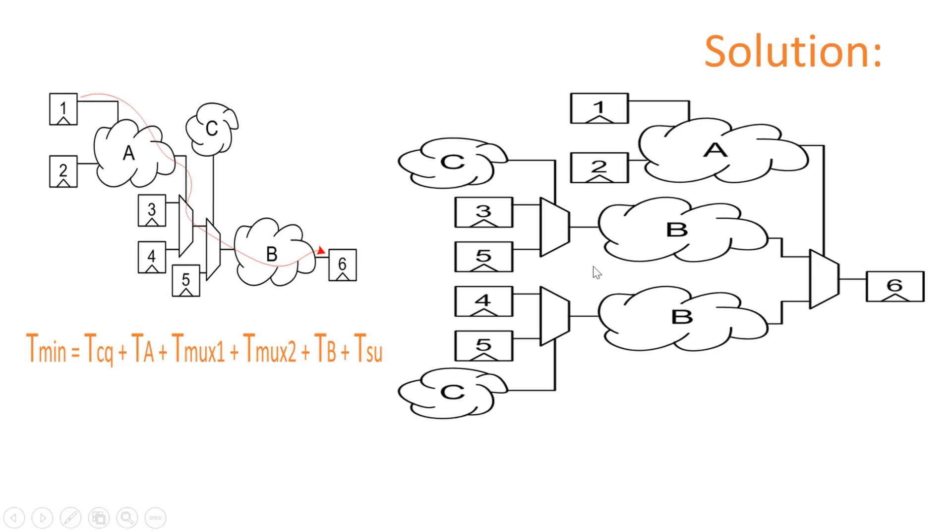And let us analyze other paths if they are impacted or not. Let us see the path from flip-flop 3 to flip-flop 6. It was from 2 MUX stages and logic B. Here in the solution, the path from flip-flop 3 is through 1 MUX, logic B and second MUX. So it is the same delay, so that means we have achieved a very simple solution which can work at very high frequency.